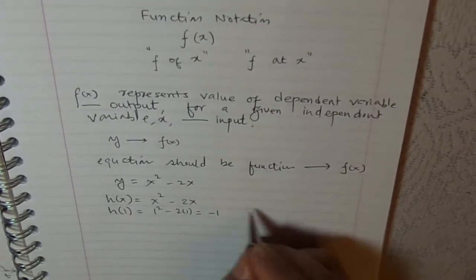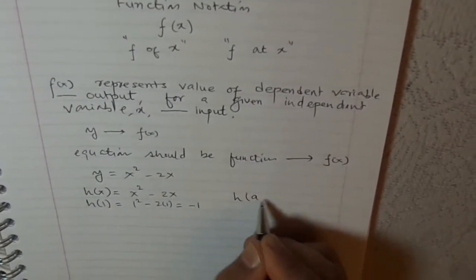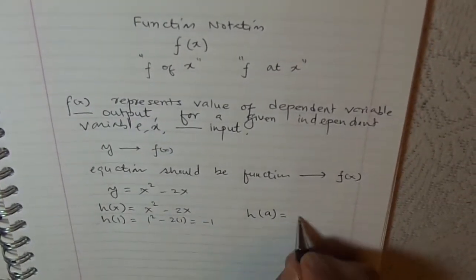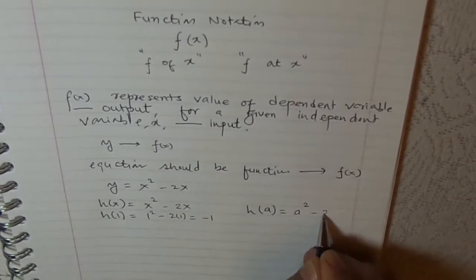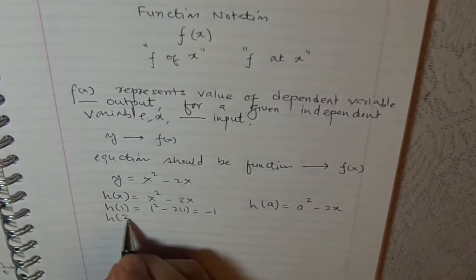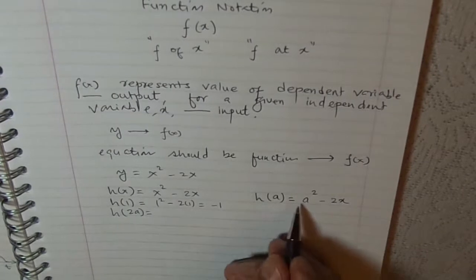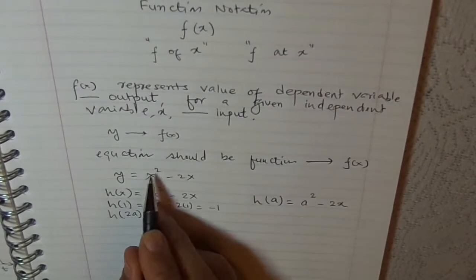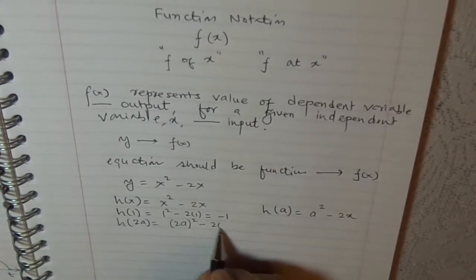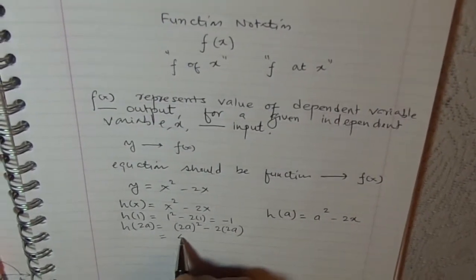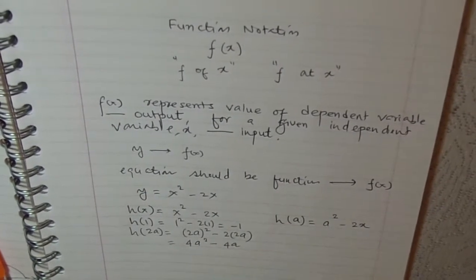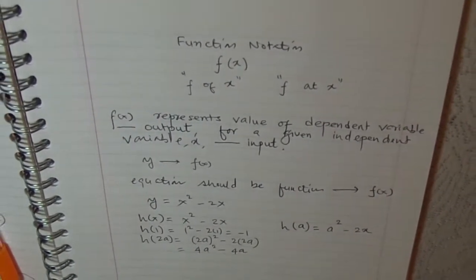You can also find h at any particular value. For example, I can have h(a) equals to replace x with a squared minus 2a. Similarly, what will be h(2a)? h(2a) will be replace with 2a squared minus 2 times 2a, which is 4a squared minus 4a.